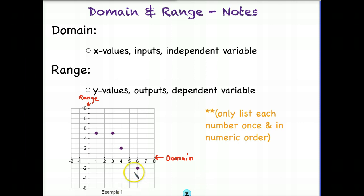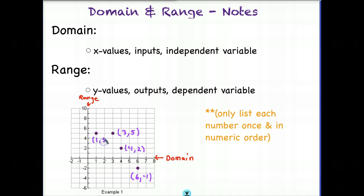The first thing we want to do is record the coordinate points of each of these dots. This dot down here: we go over on the x-axis 6 and down on the y-axis negative 1. We can look at this dot and say we go over 4 and up — looks like 2. Do the same thing for the next: 3, 5. And the final one looks like 1 comma 5. Make sure that you are competent pulling out the coordinates for each of these points. Remember that the first number represents the x, and the second number represents the y.